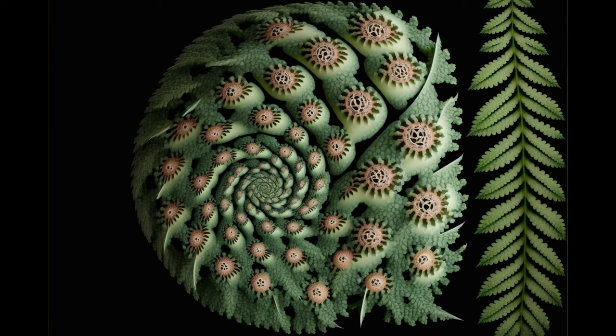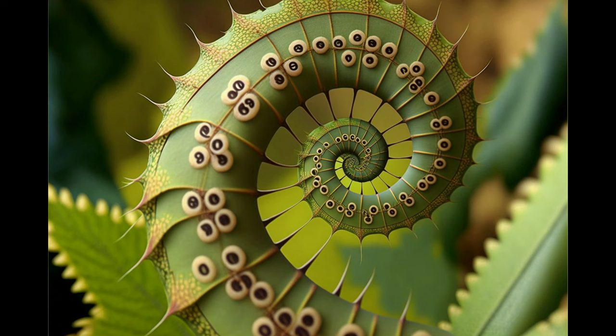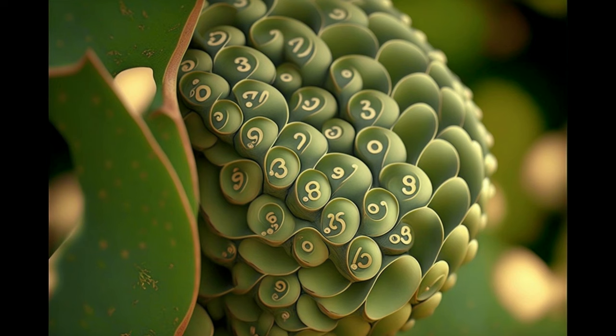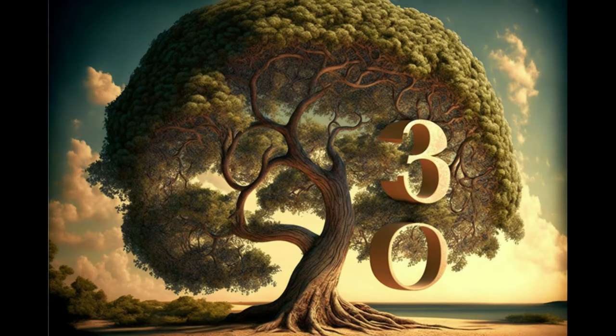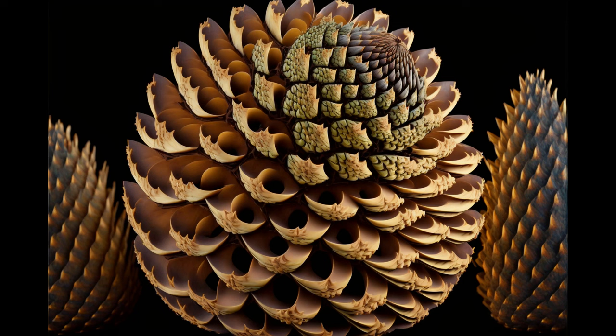In nature, Fibonacci numbers can be found in the arrangement of leaves on a stem, the branching of trees, and the arrangement of pine cone scales, among other things.